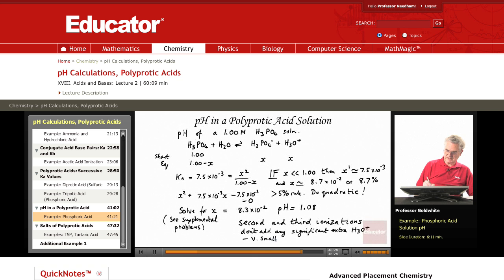And that's because of the very small Ka2 and Ka3 values. Now, under some circumstances, under some pH conditions, different ionizations come into play.